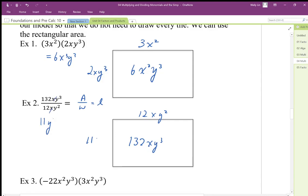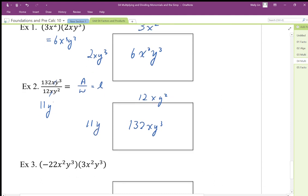Then y³ divided by y is y², just 1y, so we're just gonna be left with 11y along this edge. Maybe I'll do that in a different color so we can see where these pieces are coming from. This is 132 divided by 12 is 11, x is cancel, we're left with 1y.